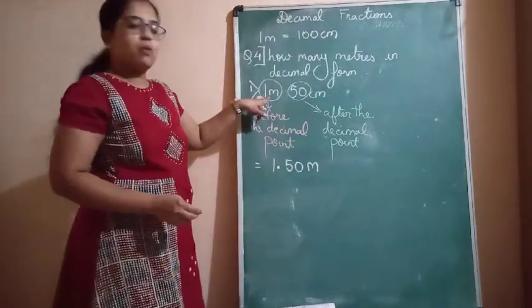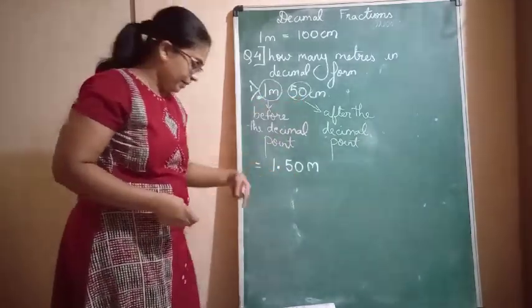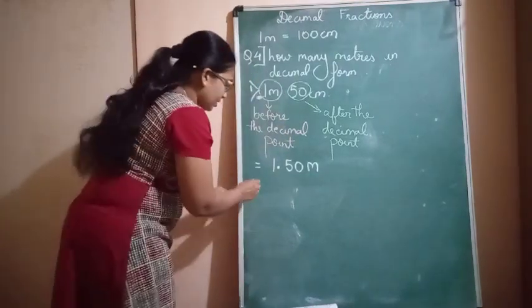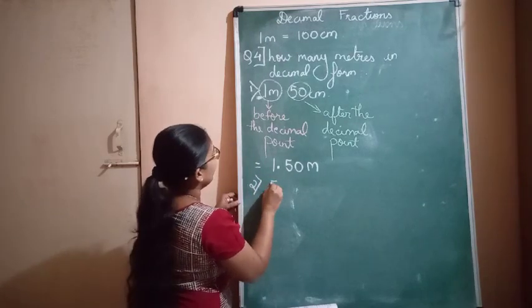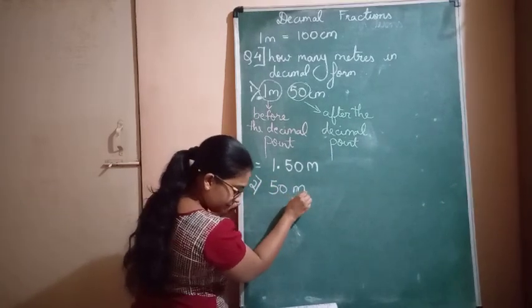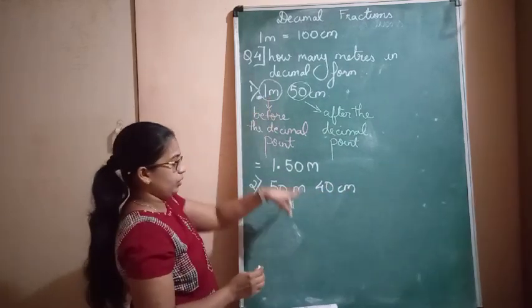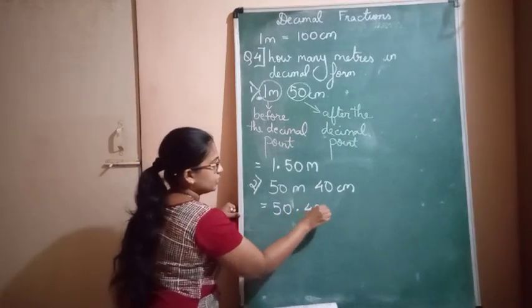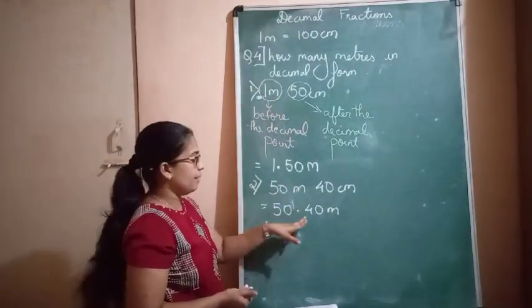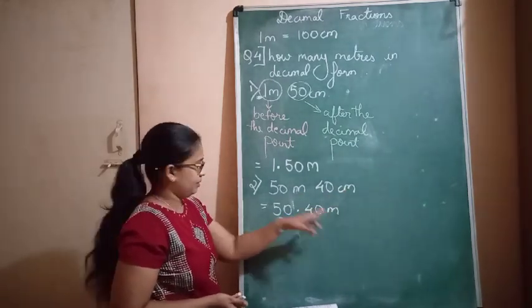The number 1 comes before the decimal and the number 50 comes after the decimal. Now let us look at our second question: 50 meters and 40 centimeters. Following the same rule we get the answer as 50.40 meters — the number with meters comes before the decimal point and the number with centimeters comes after the decimal point.